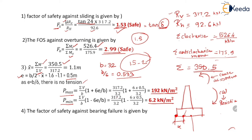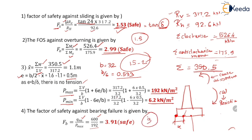The factor of safety against bearing failure is FB equal to QNA divided by Pmax. QNA is the allowable bearing pressure, given as 600 kN/m², and Pmax is 192 kN/m². So FB equals 600 divided by 192, equal to 3.91. The minimum required factor of safety against bearing is 3. Since 3.91 is greater than 3, the retaining wall is safe against bearing failure. Thank you for watching.